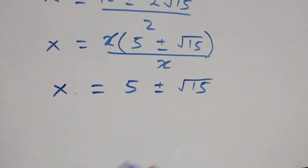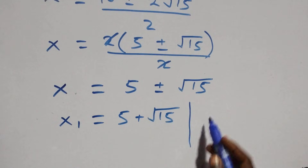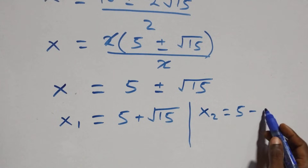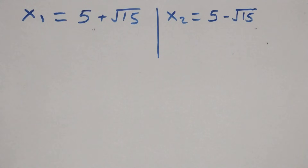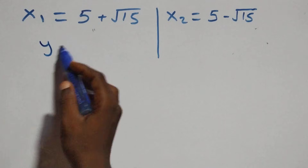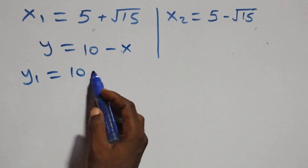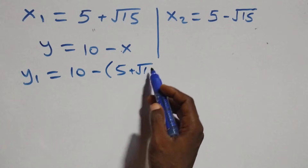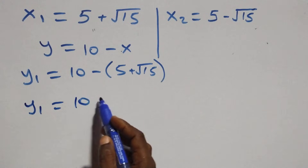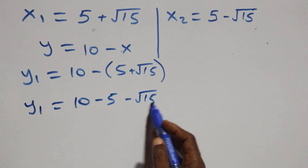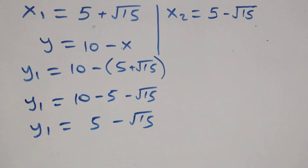We have two values of x: x₁ equals to 5 plus root 15, and x₂ equals to 5 minus root 15. Next, we find the corresponding value of y using y equals to 10 minus x. So y₁ equals to 10 minus (5 plus root 15), which gives y₁ equals to 5 minus root 15.